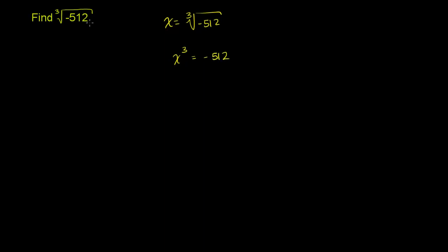And if it doesn't jump out at you immediately what this is the cube of, or what we have to raise to the third power to get negative 512, the best thing to do is to just do a prime factorization of it. And before we do a prime factorization of it and see which of these factors show up at least three times, let's at least think about the negative part a little bit.